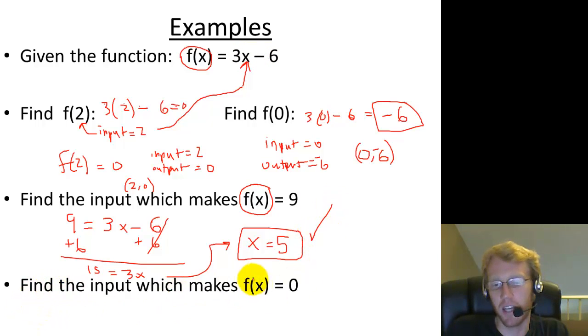Find the input which makes f of x, or the output, 0. So the output is 0. I'm going to plug in a 0 for the output. 0 is the output, equals 3x minus 6. So what input should it be? I need to solve this equation for x, which is the input. So I add 6, add 6. So I've got 6 equals 3x. If I divide both sides by 3, I get x equals 2.